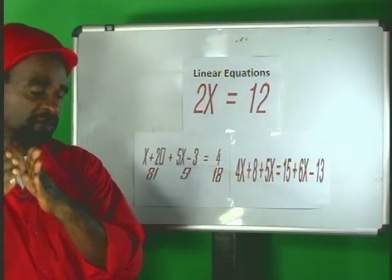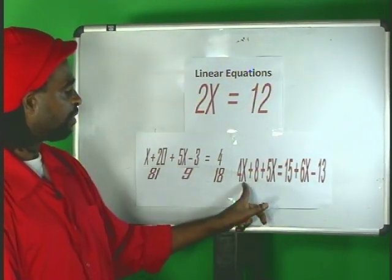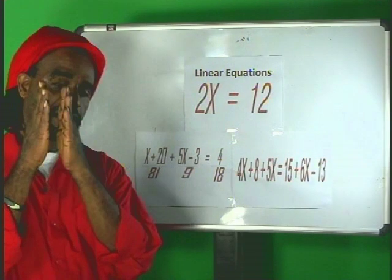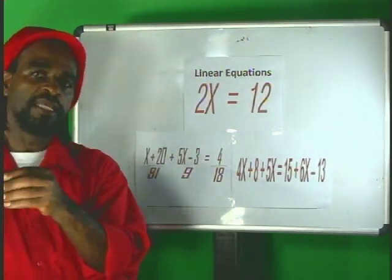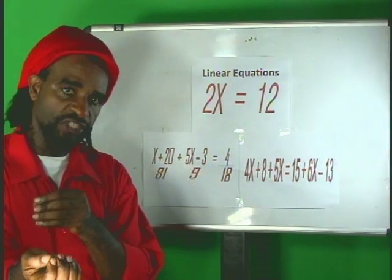What you should do primarily is to take this x value over and take this 8 over. As you take a quantity from the left hand side to the right hand side, you will have a sign change.